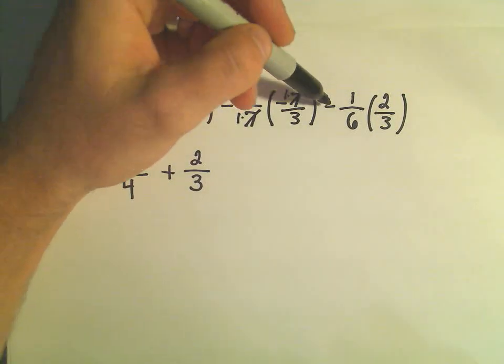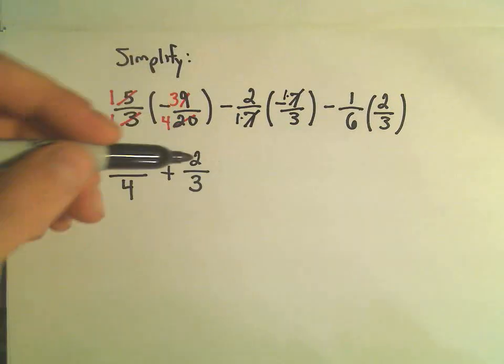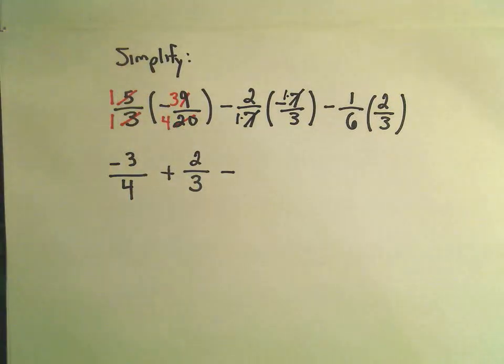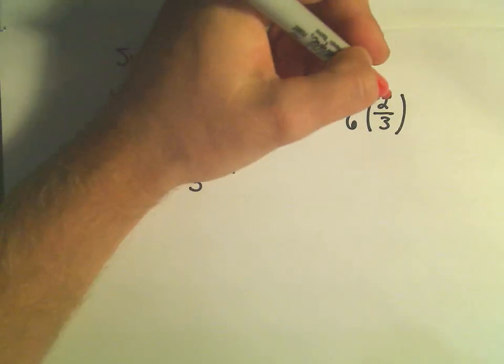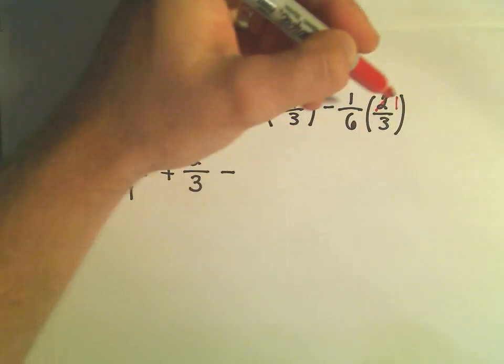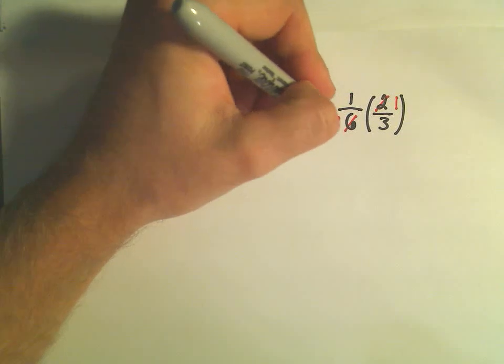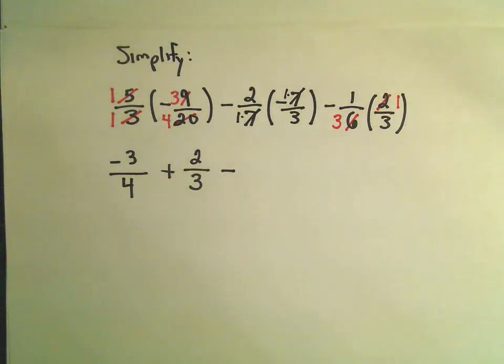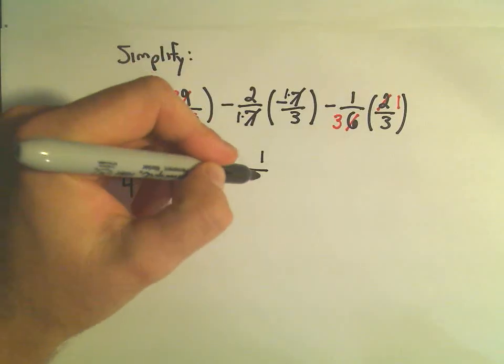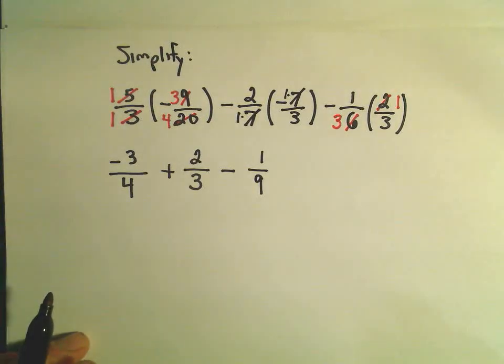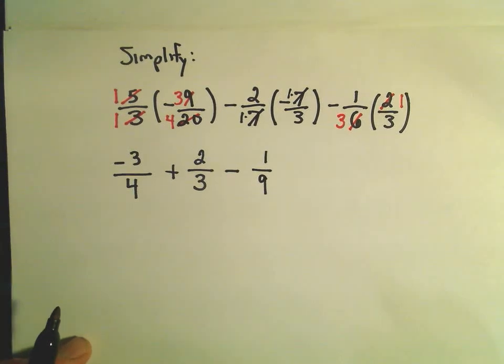And then we do the same thing one more time. Negative 1 over 6 times 2 over 3, that's going to give me a negative. So I think again, I see a 2 and a 6. 2 divided by 2 is 1, 6 divided by 2 is 3. And again, if we multiply the numbers on top, 1 times 1 is 1, 3 times 3 is 9. So we get negative 3 fourths plus 2 thirds minus 1 ninth.